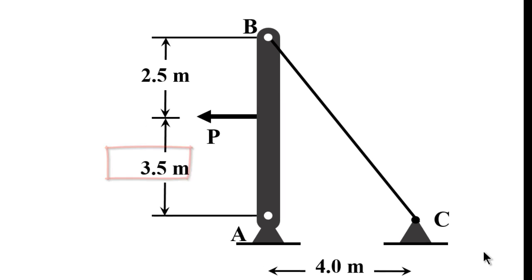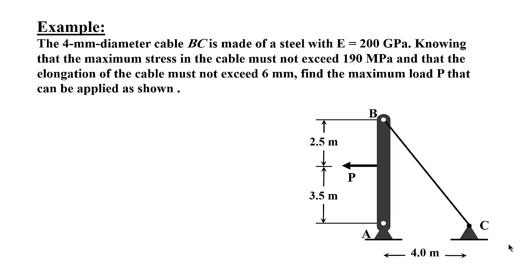The question says that the 4 mm diameter cable BC is made of steel with E modulus of elasticity equals 200 GPa, and knowing that the maximum stress in the cable must not exceed 190 MPa, and at the same time the elongation of the cable must not exceed 6 mm.